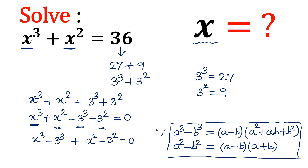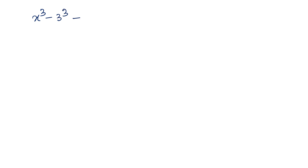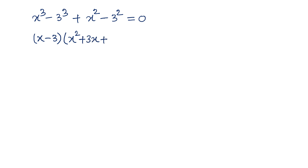Considering x³ - 3³ + x² - 3² = 0: applying the difference of cubes identity, x³ - 3³ = (x - 3)(x² + 3x + 9), since 3² = 9. Then applying the difference of squares, x² - 3² = (x - 3)(x + 3).